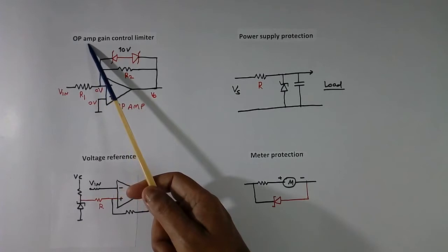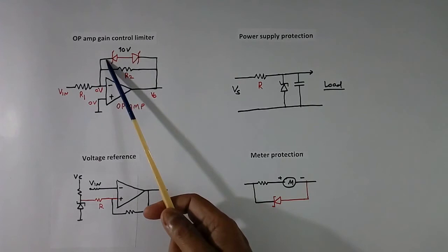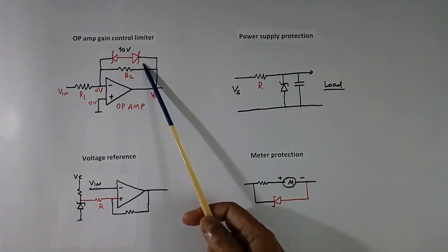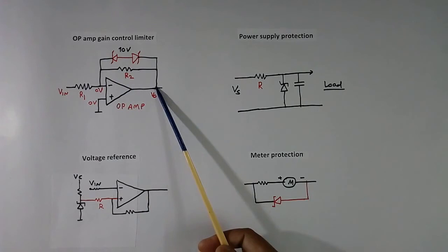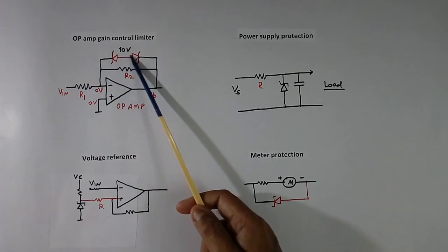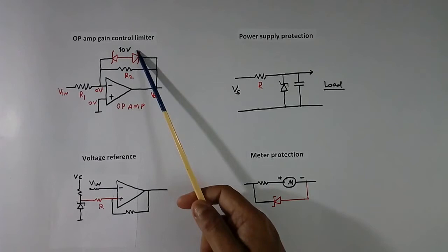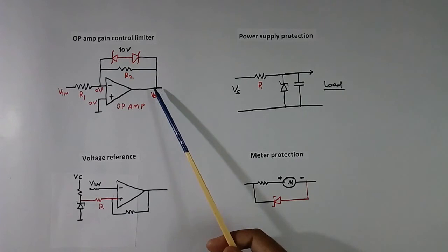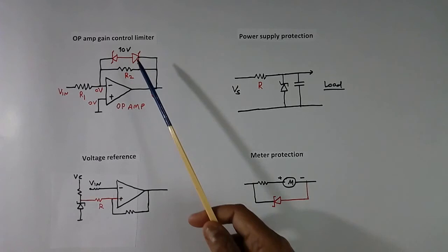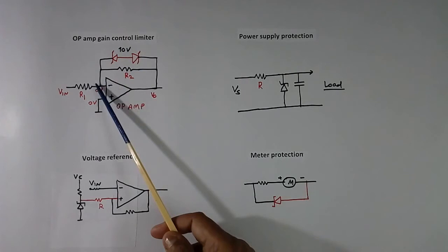Here I am using Zener diode as operational amplifier gain control limiter. I have connected 2 Zener diode in series in reverse direction. Assume total voltage is 10V. Normal gain of operational amplifier is R2 by R1 if this is not there. When this voltage exceeds more than 10V, current starts flowing like this and it will not go more than 10V. This provides the dynamic resistance and limit the voltage at this point. In many control applications, this voltage should not go to saturation. If goes to saturation, then response becomes slow. This also helps to protecting this IC, because voltage across this will be limited to 10V.